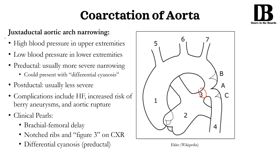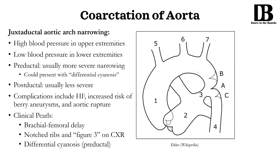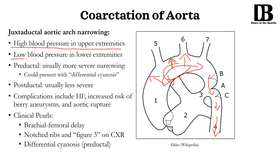So what is coarctation of the aorta? From its definition, it is juxtaductal aortic arch narrowing — just near the ductus arteriosus you're going to have narrowing of the aorta. You can have preductal coarctation of the aorta, where the narrowing happens just before the ductus arteriosus, or postductal coarctation of the aorta, where this narrowing happens just after. Since you have this sort of coarctation preventing much flow from going into the descending aorta, you have a lot of blood in the region proximal to the narrowing. Since you have more blood there, you have more pressure. Down in the descending aorta you'll have lower pressure. Since the descending aorta feeds the lower limbs, you should expect high blood pressure in the upper extremities and low blood pressure in the lower extremities.